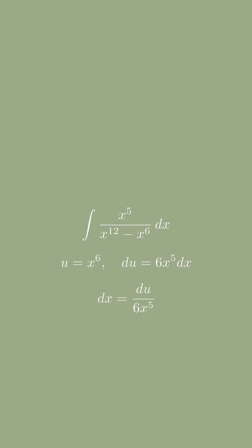Substituting this in, the integral becomes 1 over 6 times the integral of 1 over u squared minus u with respect to u.